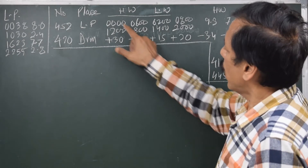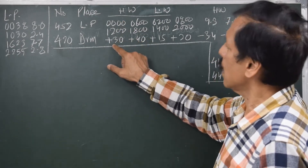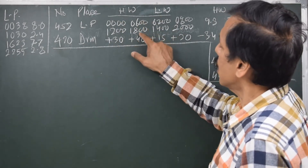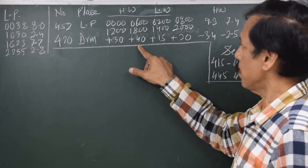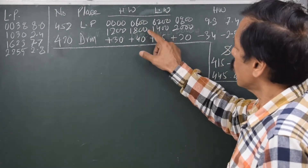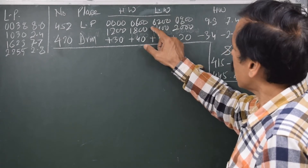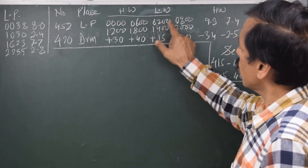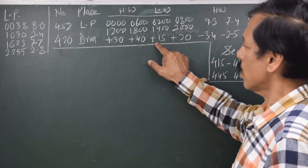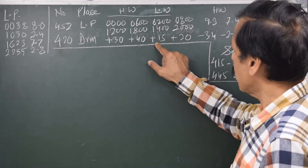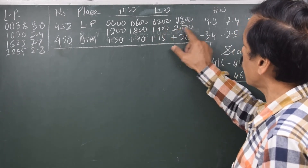At 0000 and 1200 the time difference for Drumor is plus 30 minutes. At 0600 and 1800 the time difference is plus 40 minutes. Similarly, for low water at 0800 and 1200 the time difference for Drumor is plus 20 minutes.